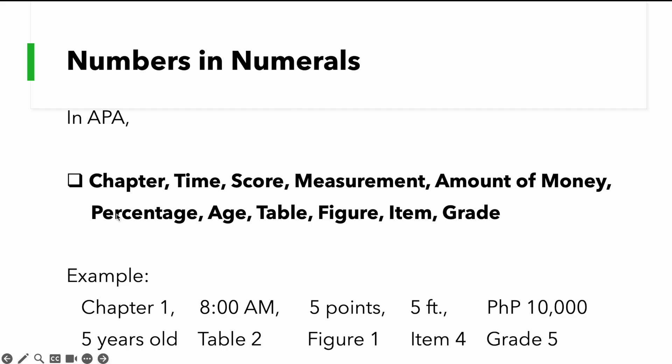In APA, chapter, time, score, measurement, amount of money, percentage, age, table, figure, item, grade, and others have to be written in numerals. Look at these examples.